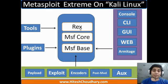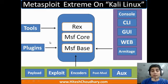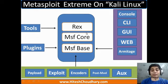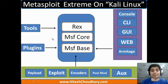This core part is set in a particular box supported by various other things — there are some tools and some plugins which support this core part. This core can be accessed by various consoles like CLI, GUI, Web, or Armitage. The entire framework is dependent on payloads, exploits, encoders, post modules, and auxiliaries. We will cover what these terms mean in just a second.